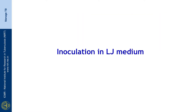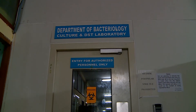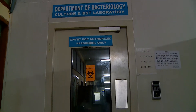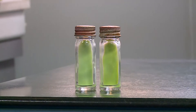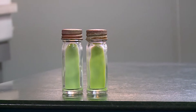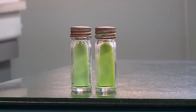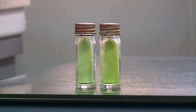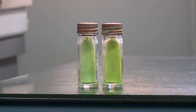We will now see how the LJ medium is inoculated with the processed sputum deposit. This is how the plain LJ medium looks, onto which we are going to inoculate the processed sputum deposit. It has a little water of condensation at the bottom, which provides moisture for the growth of the organism.